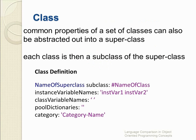As I mentioned before, every class is a subclass of a superclass. This is the class definition in Smalltalk. First, we write the name of the superclass, the keyword subclass, and the name of our class. Within a class, you can define many instance variables, class variables, pool dictionaries, and also a category.